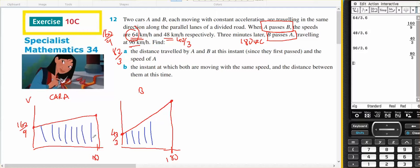Because the area under the velocity time curve is the same, so I know that three minutes later, B passed A traveling at 96. So B was traveling at 80 on 3.